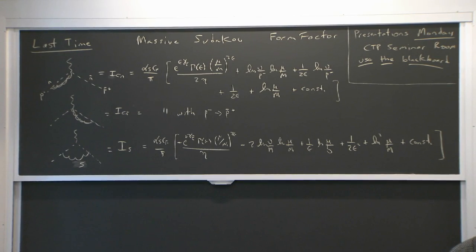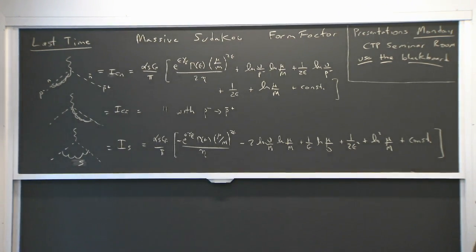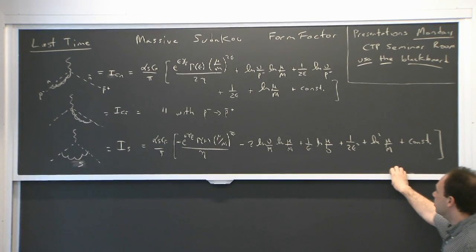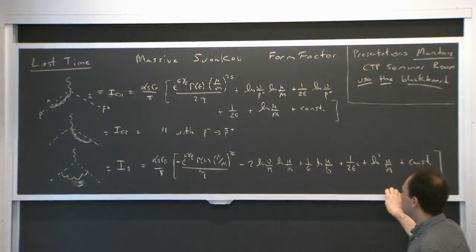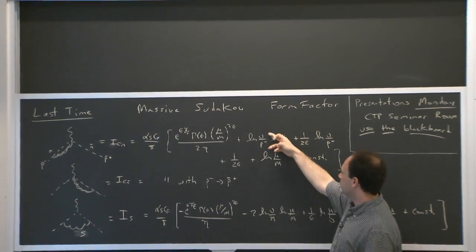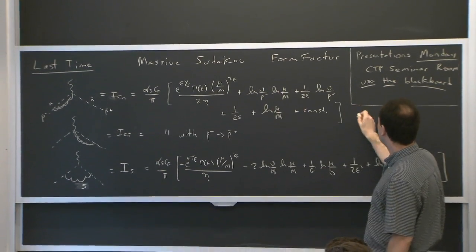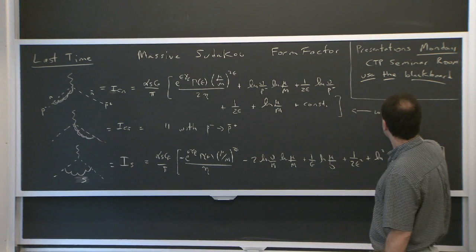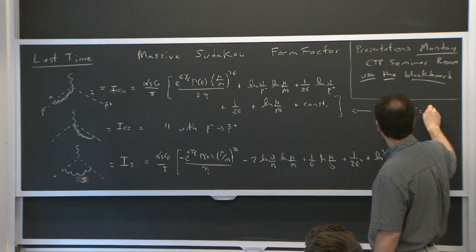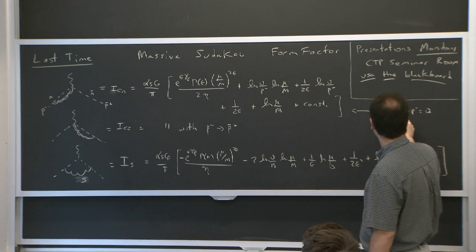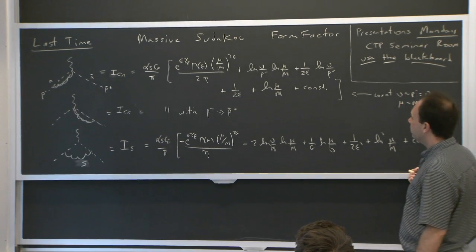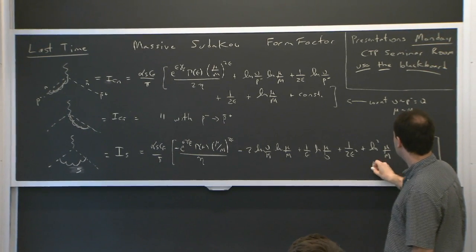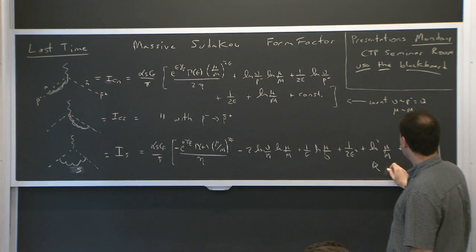If you stare at these results, you can see where you need to take those scale parameters in order to minimize the logarithms. In the collinear diagrams, you need to take nu of order P-minus, and P-minus is the hard scale, and you want mu of order M, which is the scale of the hyperbola. In the soft sector, you want nu and mu to be the same size, both of order M.